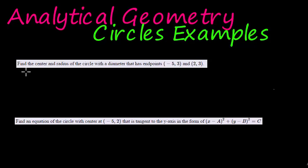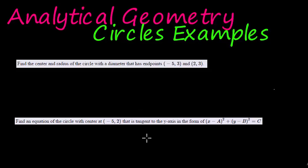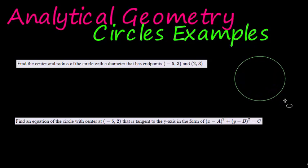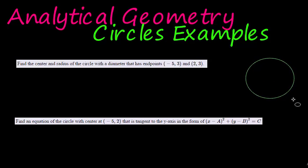Our first question asks us to find the center and the radius of a circle with a diameter that has endpoints — and then it gives us the two endpoints for the diameter. If we have the endpoints for the diameter, let's draw a rough sketch. There's our circle and we are given the diameter.